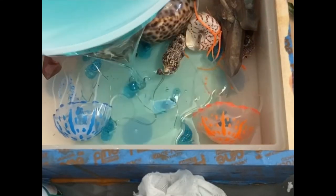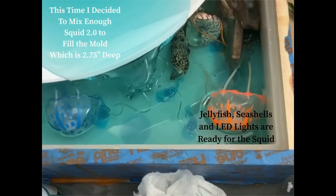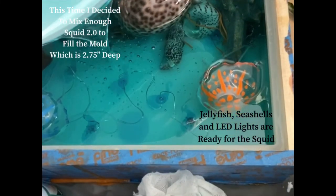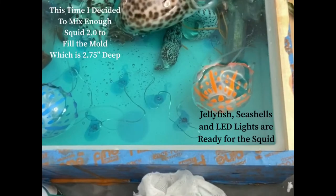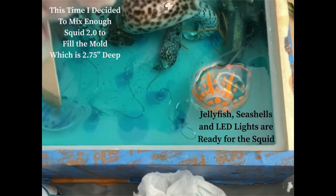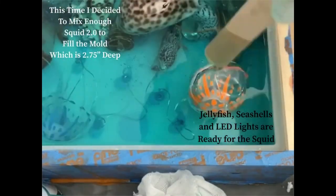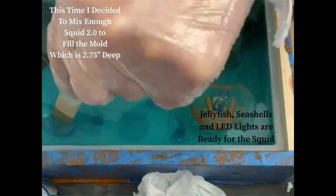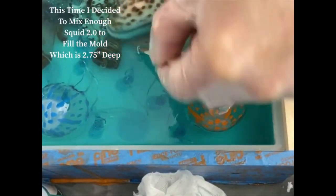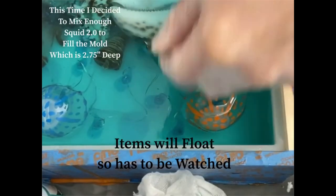For the second sculpture I added some different lights, different colored jellyfish, and this time decided to mix enough of the 2.0 to fill the whole mold which is almost three inches in height. The only problem with this is that the items will float, so I had to really be careful and babysit all my seashells and my little jellyfish to make sure they didn't float completely out of position.